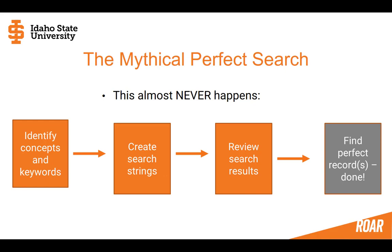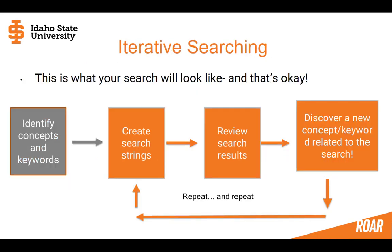Searching never happens this way. It's never just, 'Oh great, there's the record I was looking for.' Searching always seems to look like this, especially for a research paper or something long term. You'll identify your concepts and keywords, run some searches, look at what you found and it's not what you were hoping for. But you may have discovered a new concept or keyword, and then you have to repeat — go back, change your search strings, find new stuff, and make decisions about what to do next. This is what searching looks like, and that's okay.